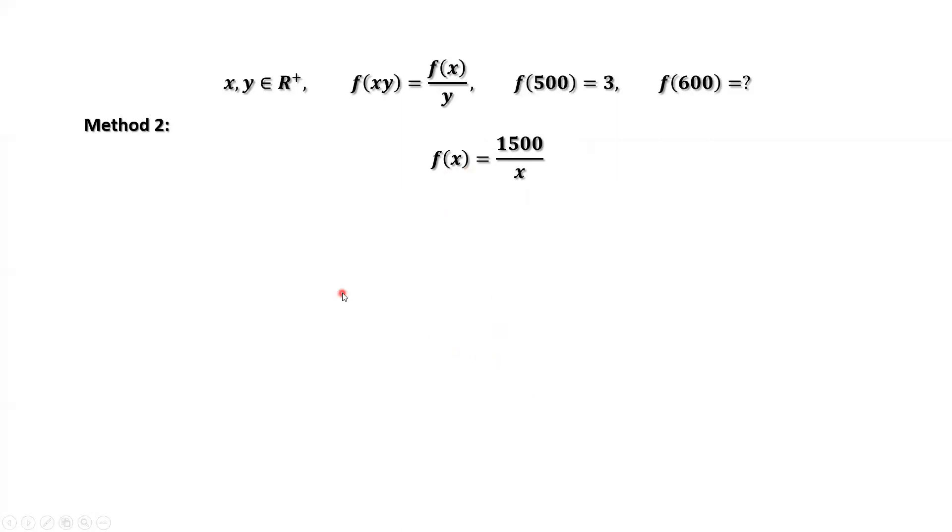What is f of 600? Just replace x by 600 here. f of 600 equals 1500 over 600, which is 5 over 2. That's all. Thanks for watching and see you next time.